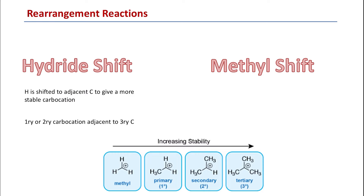If there is a primary or secondary carbocation that is generated in the reaction and that is adjacent to a tertiary carbon, then the hydride will be shifted from the tertiary carbon to the adjacent carbocation — primary or secondary — to generate a more stable tertiary carbocation. For example, here we have a secondary carbocation, and there is a hydrogen on this adjacent tertiary carbon, and the hydride can be shifted towards this carbocation to generate the more stable one.